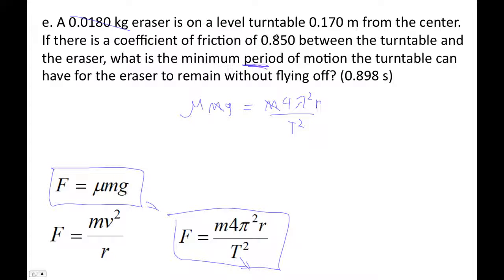This is our coefficient of friction, so let's fill that in: 0.850. G is 9.8. Then that's 4π². What's our radius? There it is: 0.170. And then that's divided by T².